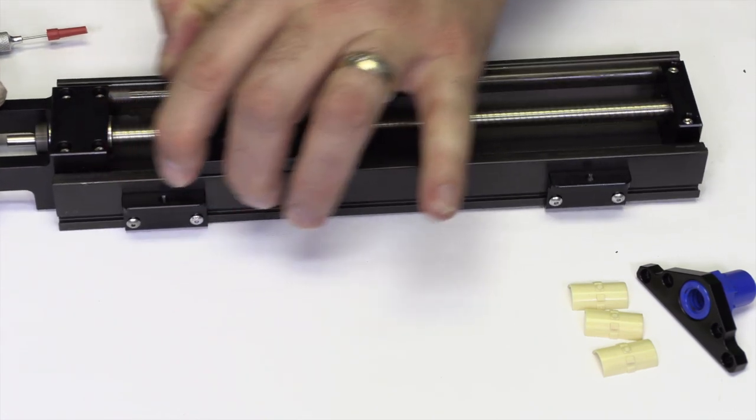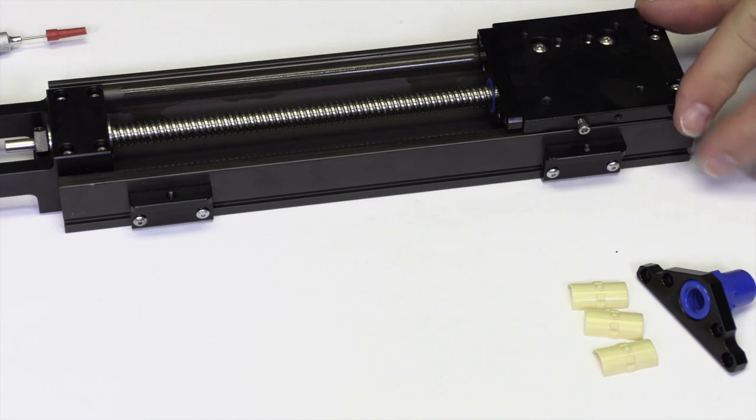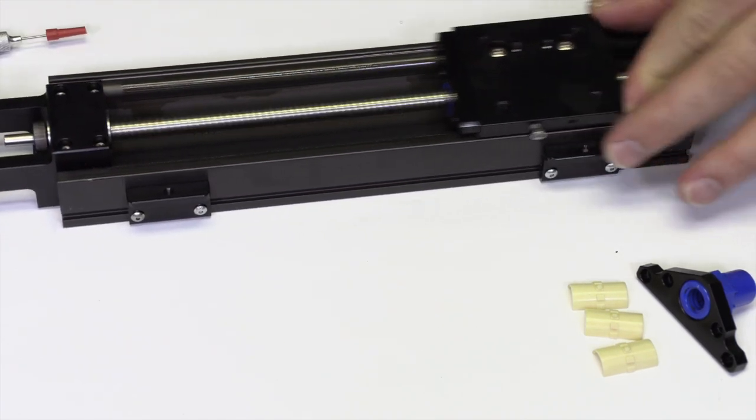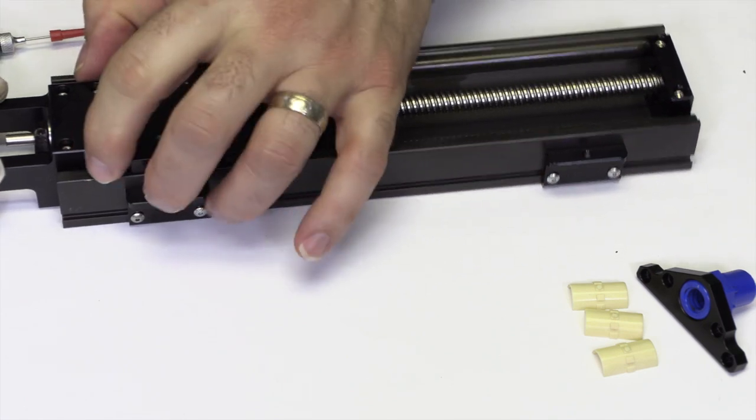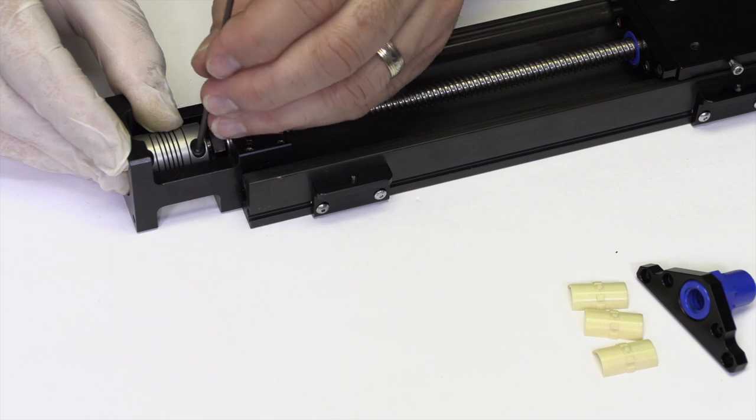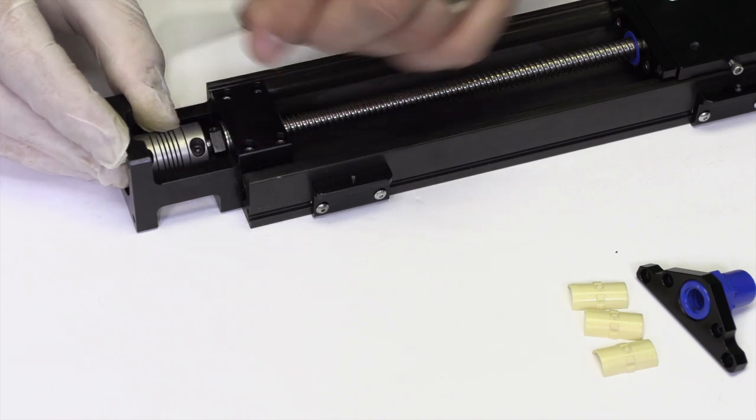Move the carriage back and forth from end to end to check for consistent movement. Apply lubricant to the drive screw and slide the carriage to distribute the lubricant along the entire length. If the carriage is positioned and tightened correctly, then it is time to reinstall the coupling and motor.